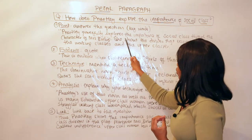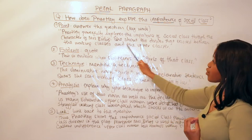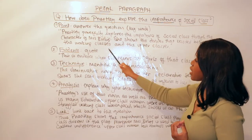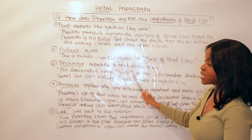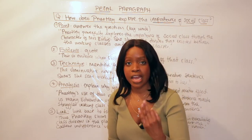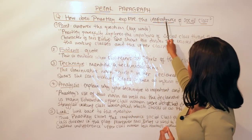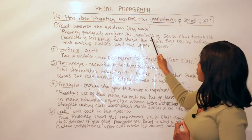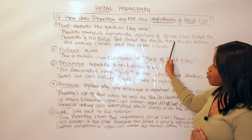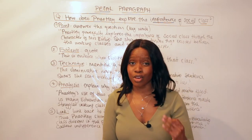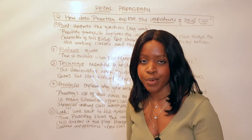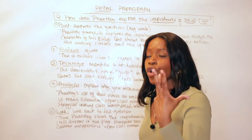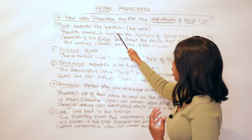Here is my opening point: 'Priestley powerfully explores the importance of social class through the character of Mrs. Birling. She shows the divides that existed between the working classes and the upper classes.' Notice I've used the phrase 'importance of social class' from the question — don't feel like you're repeating yourself. Examiners and teachers want to see that, because it shows you understand the question.